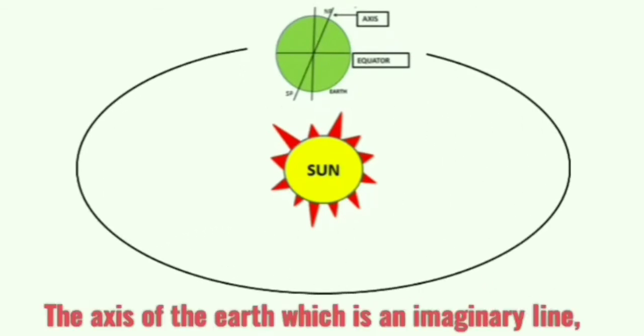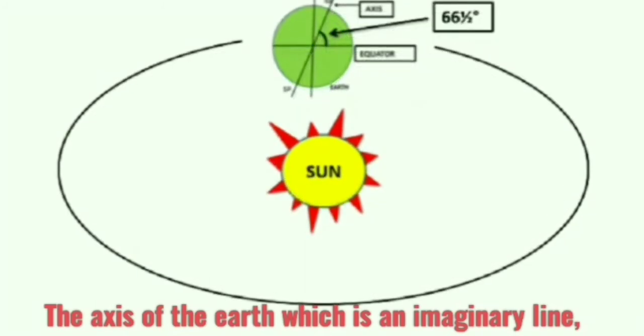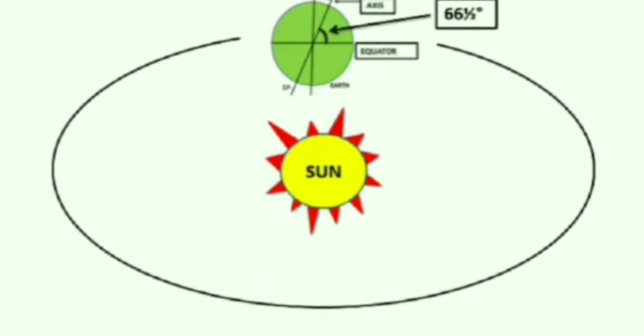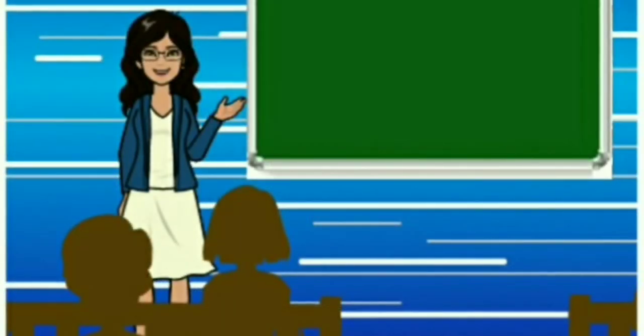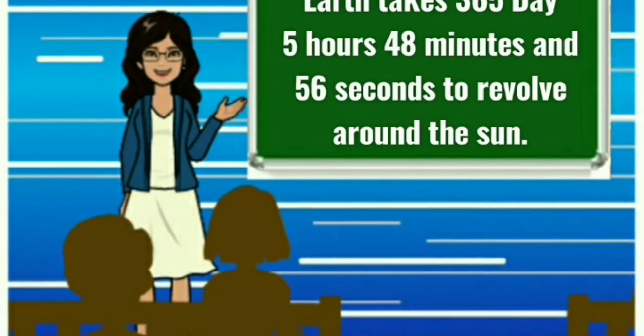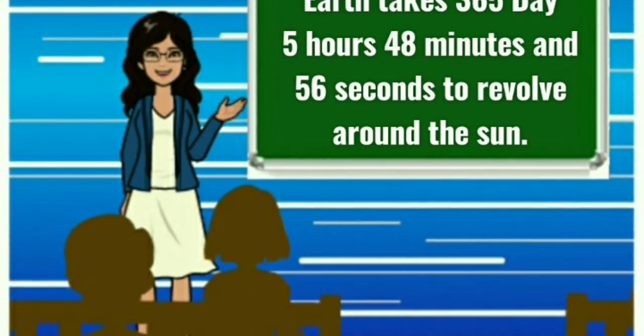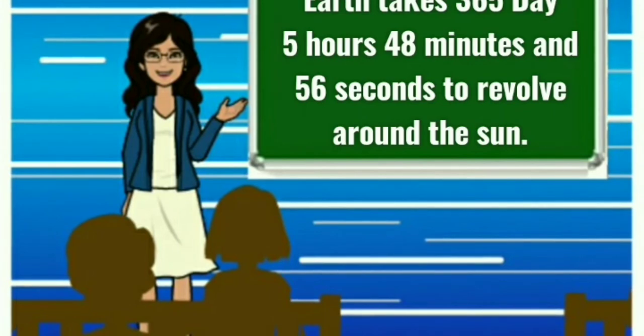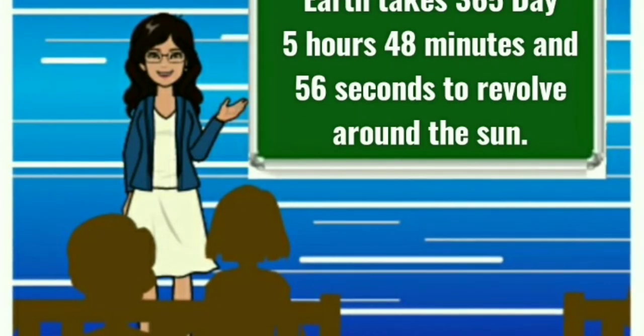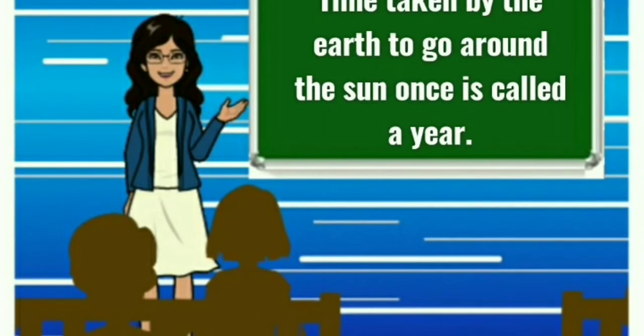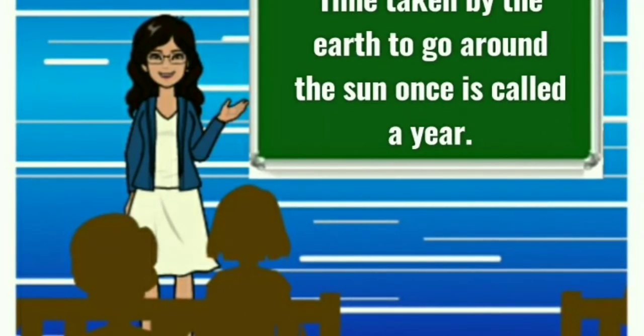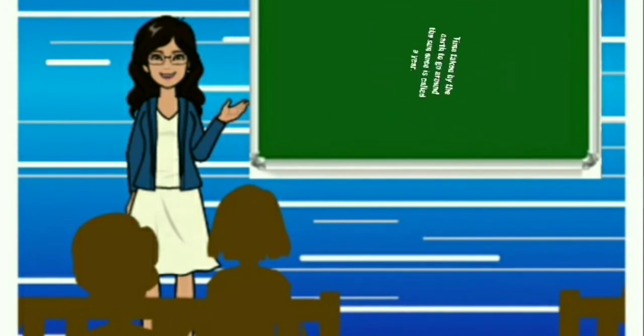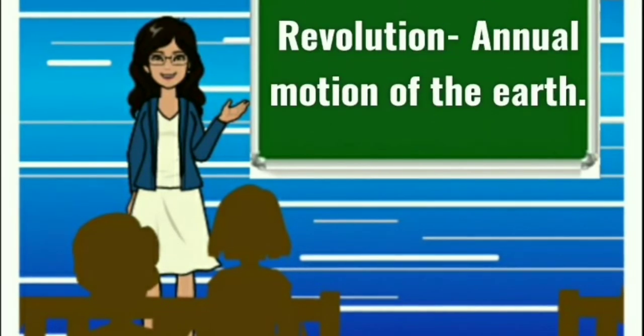Orbit is elliptical in shape and the axis of the earth makes an angle of 66 and half degrees with its orbital plane which you can see in the diagram. Do you know the earth takes 365 days, 5 hours, 48 minutes and 56 seconds to revolve around the sun? The time taken by the earth to go around the sun once is called a year. Thus, revolution is also called the annual motion of the earth.